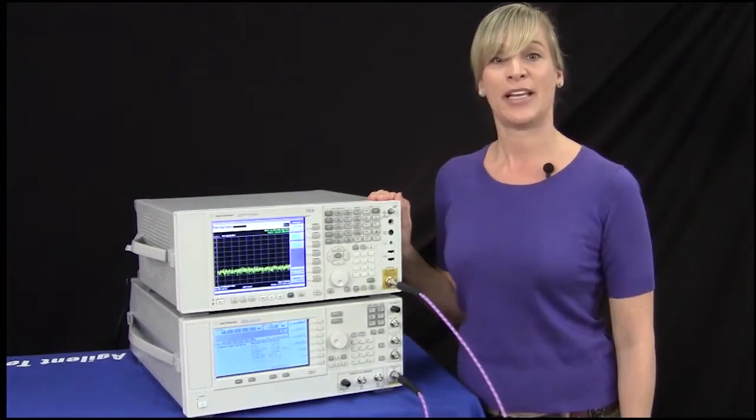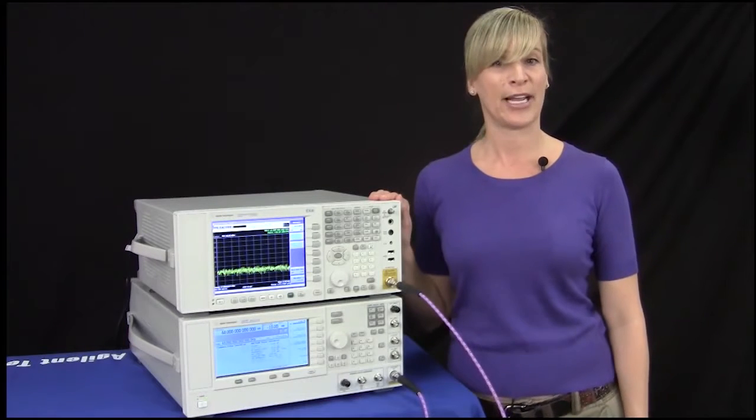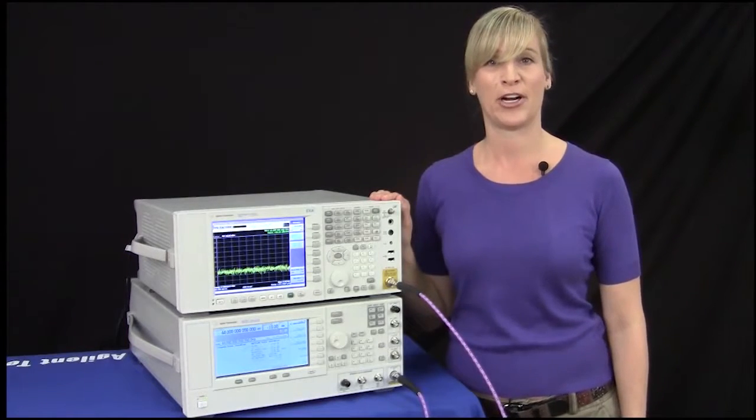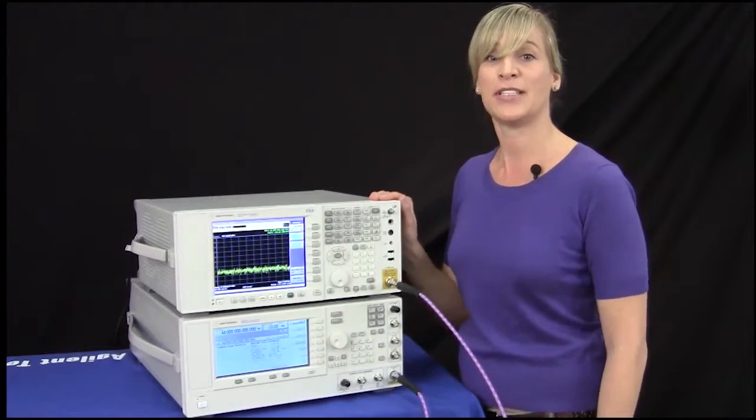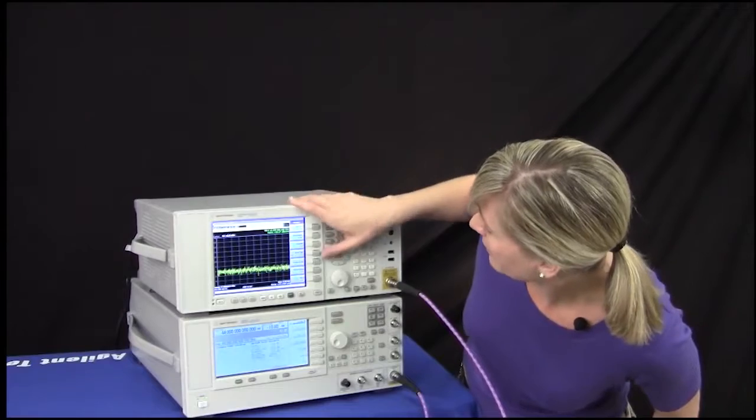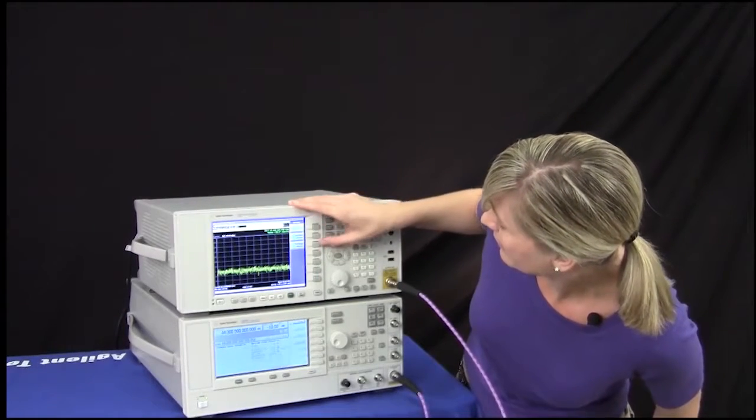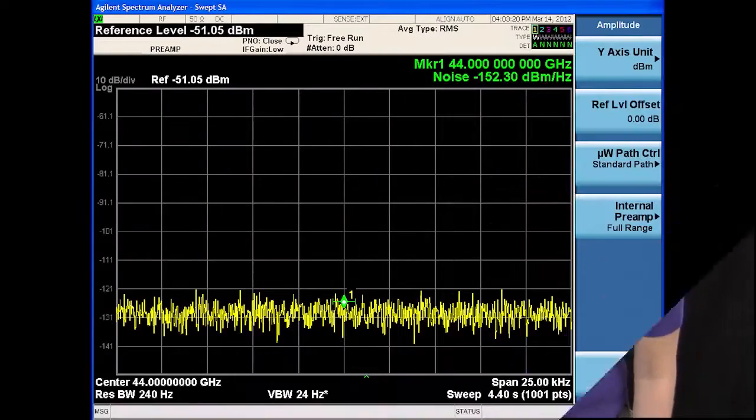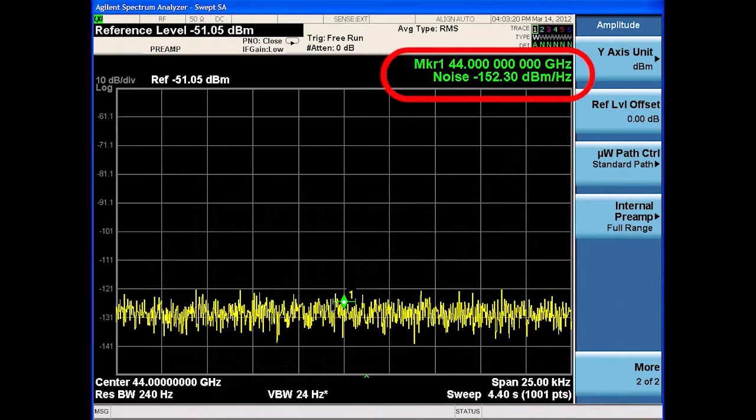The new millimeter wave EXA comes with a pre-amplifier option P44 that enables you to improve the sensitivity all the way up to 44 gigahertz. And now you can see that the noise floor performance of the new millimeter wave EXA at 44 gigahertz is better than negative 150 dBm per hertz.